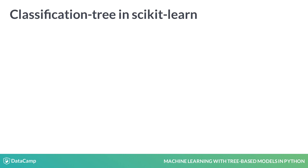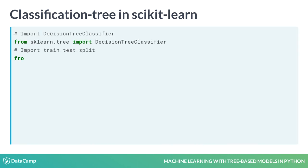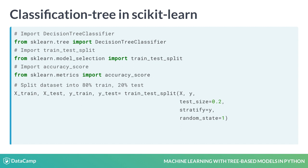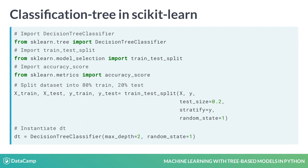Now that you know what a classification tree is, let's fit one with scikit-learn. First, import DecisionTreeClassifier from sklearn.tree as shown in line 1. Also, import the functions train_test_split from sklearn.model_selection and accuracy_score from sklearn.metrics. In order to obtain an unbiased estimate of a model's performance, you must evaluate it on an unseen test set. To do so, first split the data into 80% train and 20% test using train_test_split. Set the parameter stratify to y in order for the train and test sets to have the same proportion of class labels as the unsplit dataset. You can now use DecisionTreeClassifier to instantiate a tree classifier, dt, with a maximum depth of 2 by setting the parameter max_depth to 2.